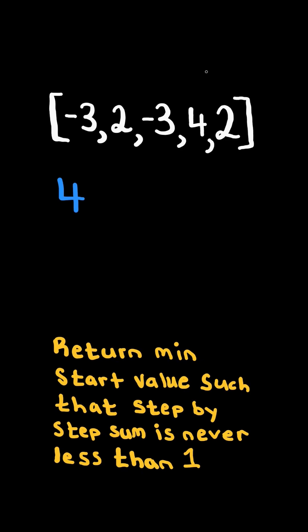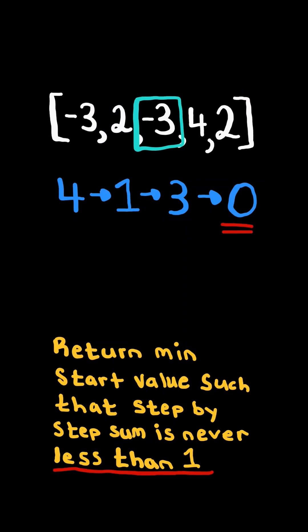For example, if we choose a start value of 4, we subtract 3 to get 1, add 2 to get 3, subtract 3 to get 0, but the sum is less than 1. So this is an invalid start value.